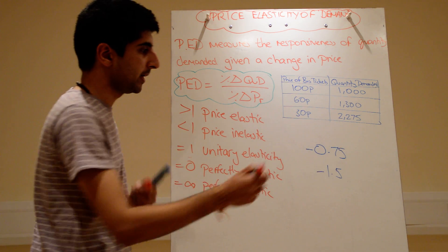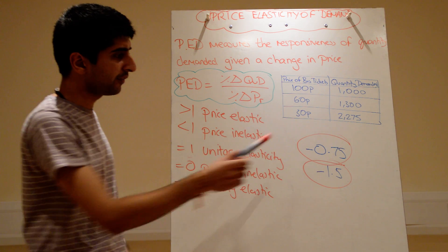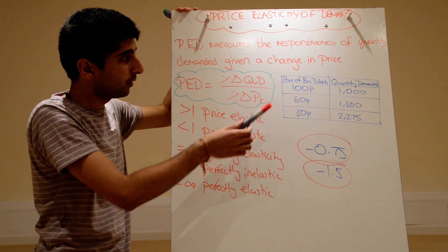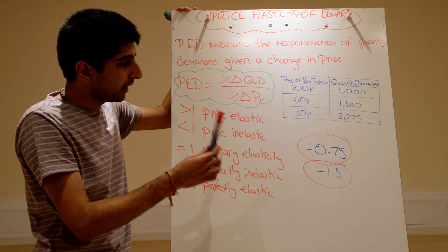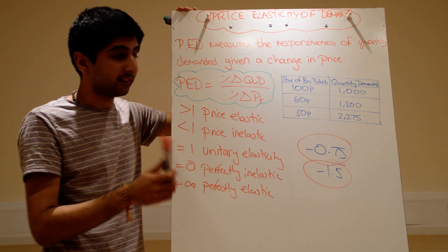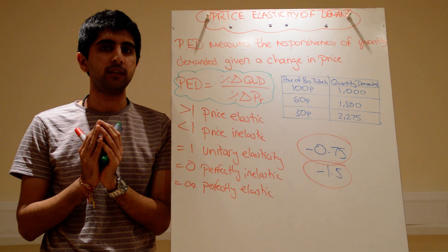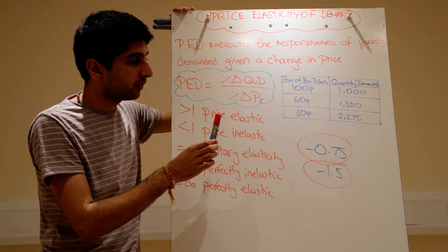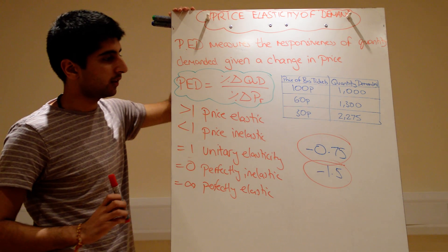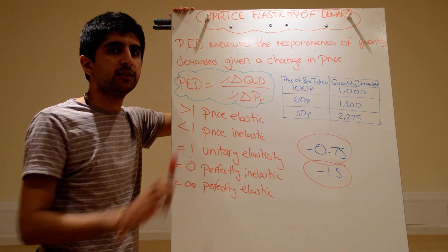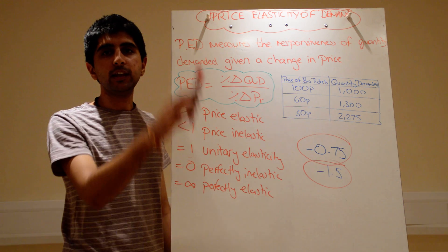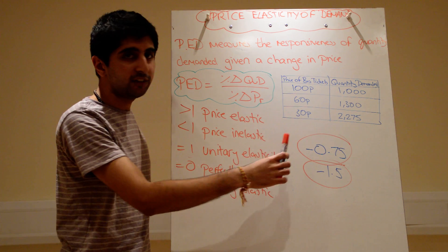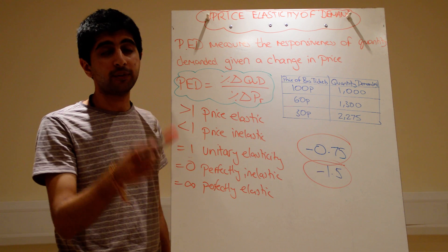So we've got two figures — let's look at what they mean. The first one: when we went from 100p to 60p, our figure was 0.75 (ignoring the minus). That tells us that demand for bus travel when we reduced the price from 100p to 60p was price inelastic, because the figure is less than 1. That means demand doesn't respond very greatly to a change in price — demand changes less than proportionately to the change in price. For example, a 10% increase in price would lead to just a 7.5% fall in quantity.